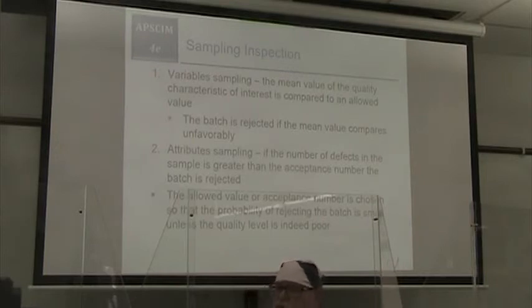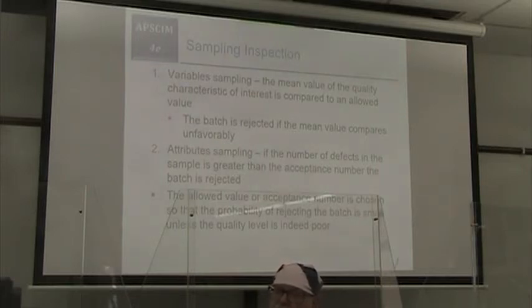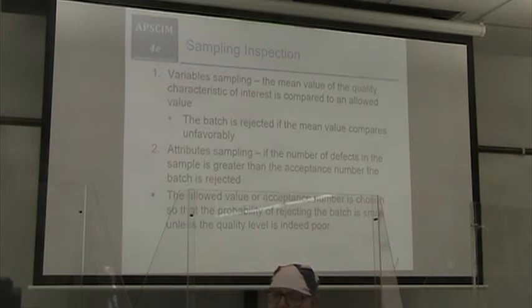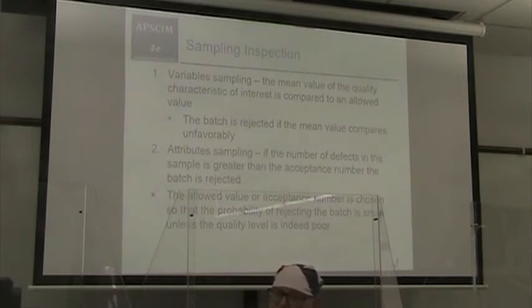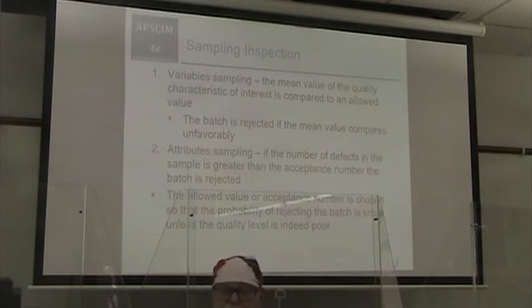Sampling inspection can be done as variable sampling, where the mean value of the quality characteristic of interest is compared to an allowed value — the batch is rejected if the mean value compares unfavorably. We can also have attribute sampling, where if the number of defects in the sample is greater than the acceptance number, the batch is rejected. The allowed value or acceptance number is chosen so that the probability of rejecting the batch is small unless the quality level is indeed poor.